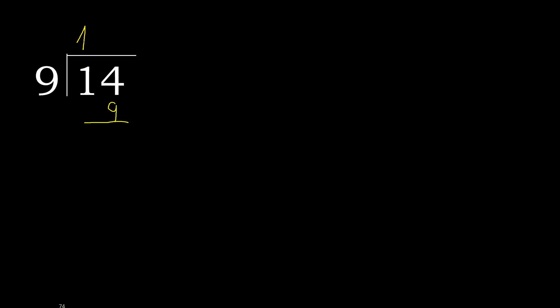14 minus 9 is 5. There is no more number, therefore we complete with a 0 here, with a point — complete the point.